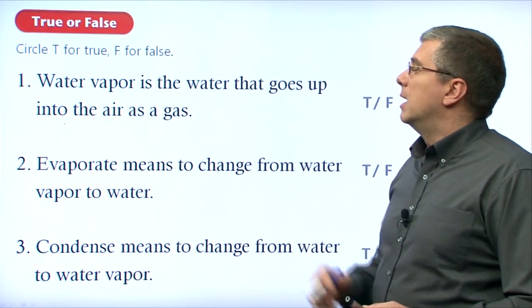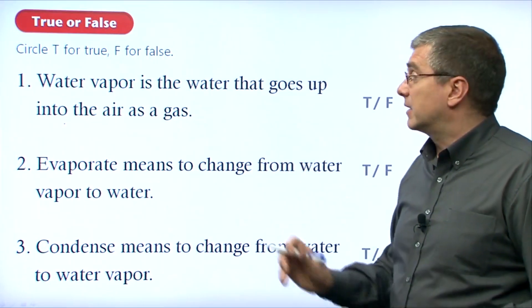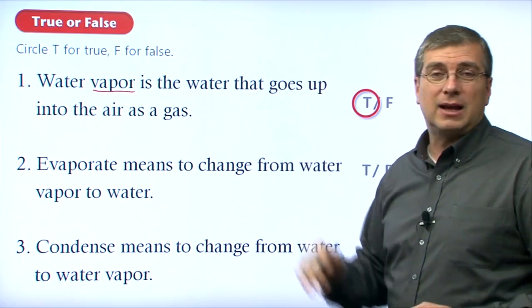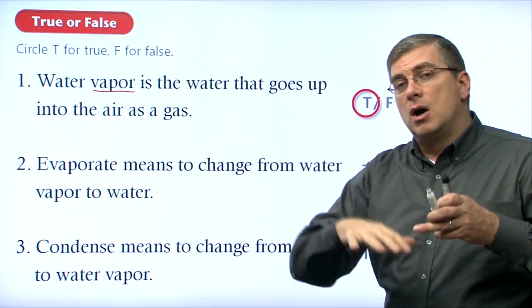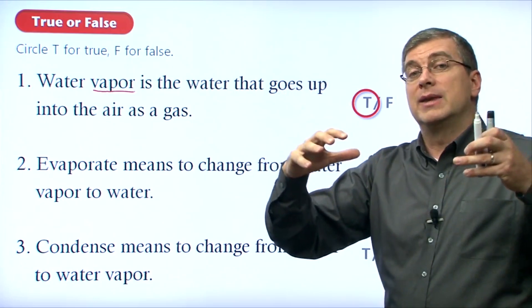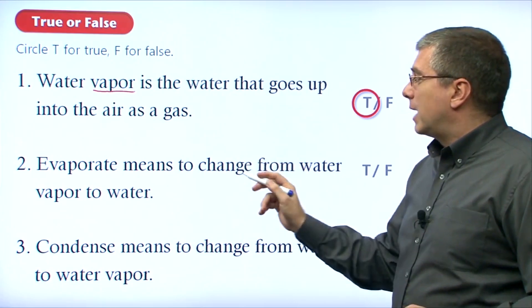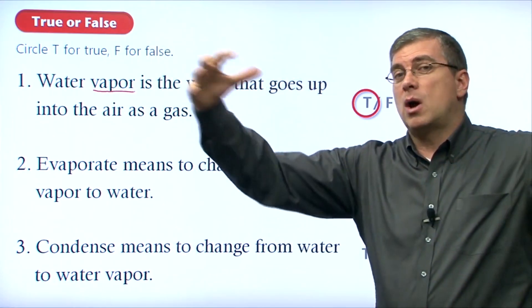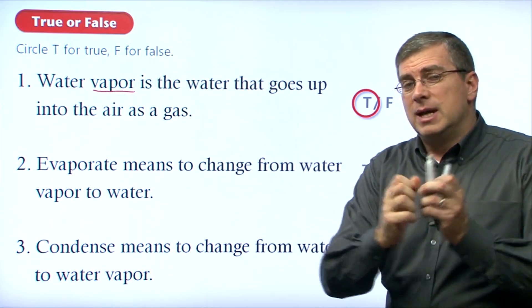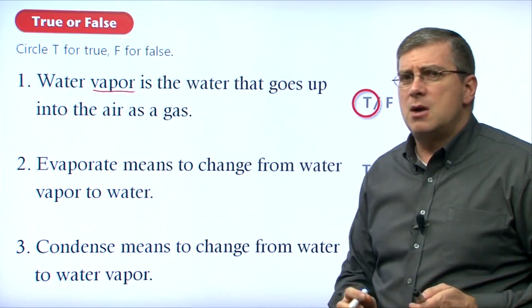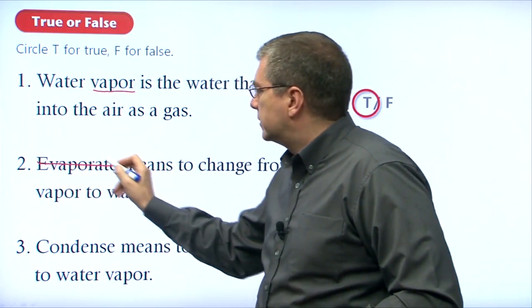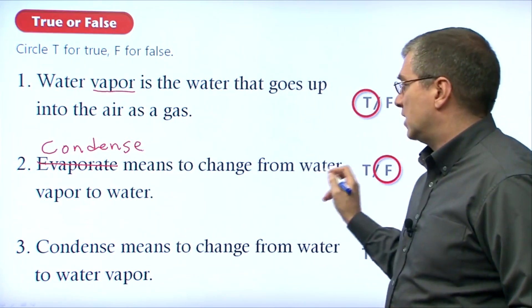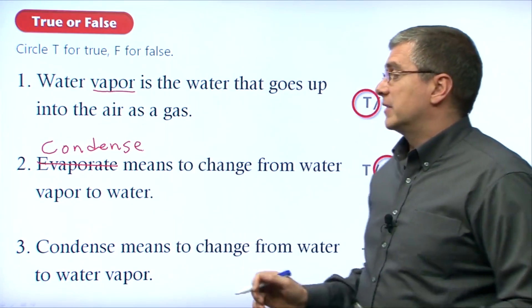Now our true/false questions. Number one: water vapor is the water that goes up into the air as a gas — it's evaporating and turning from liquid water to gaseous water. That is true. Number two: evaporate means to change from water vapor to water. Think about it — water vapor is the water spreading far apart, and liquid water is when it comes together. So if it's coming together, we don't say it's evaporating — that's false. We have to change evaporate to condense.